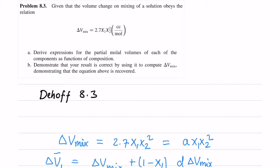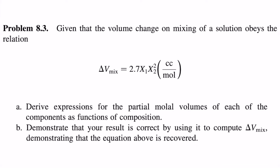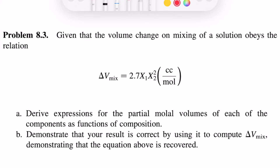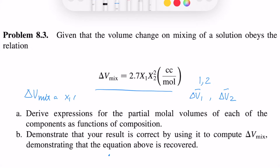Hi guys, today I want to discuss D half 8.3 question. In the 8.3 question we are given a volume change on mixing of a solution that obeys a parabolic type of equation, and we need to derive the partial molal volumes of each component. There are two components and we need to derive delta v1 bar of the first component and delta v2 bar of the second component, and then demonstrate that delta v_mix equals x1 times delta v1 plus x2 times delta v2.